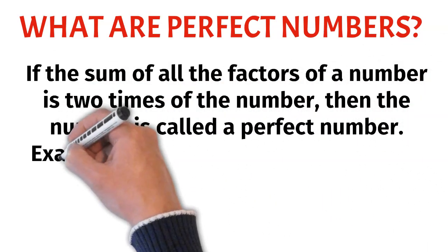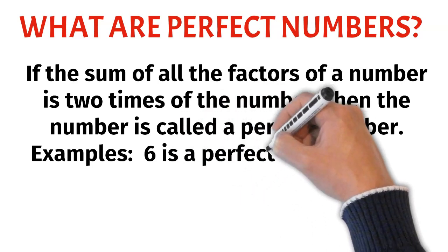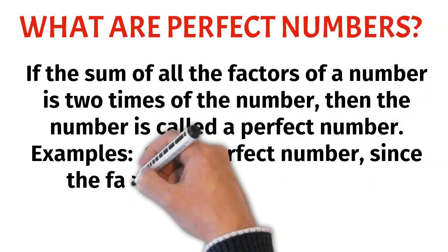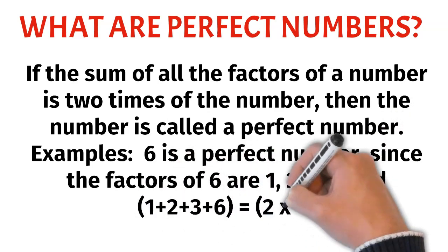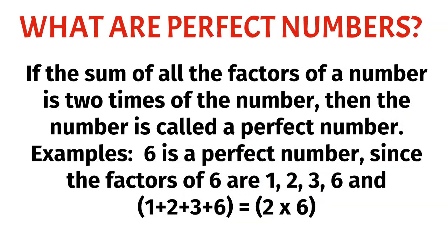Example: 6 is a perfect number since the factors of 6 are 1, 2, 3, 6 and 1 plus 2 plus 3 plus 6 is equal to 2 into 6.